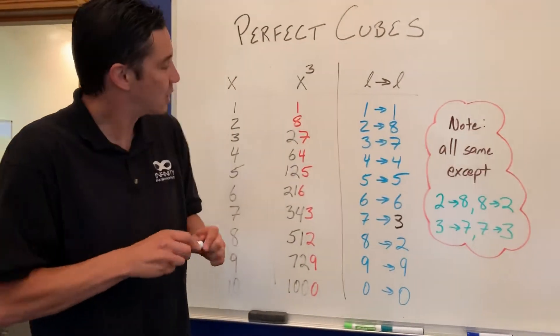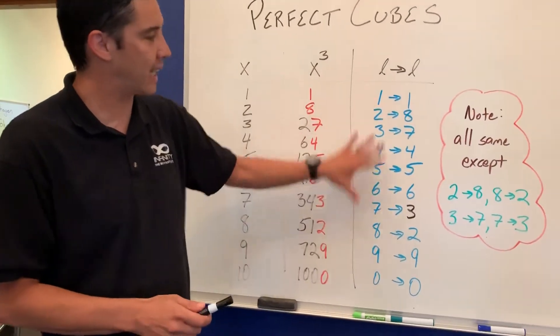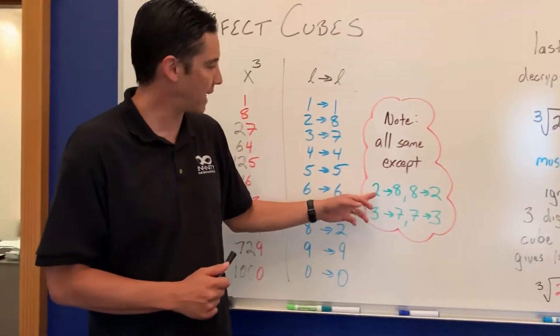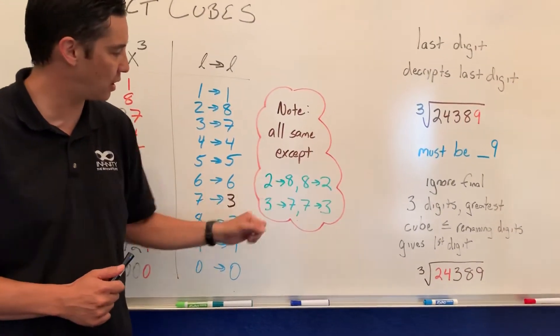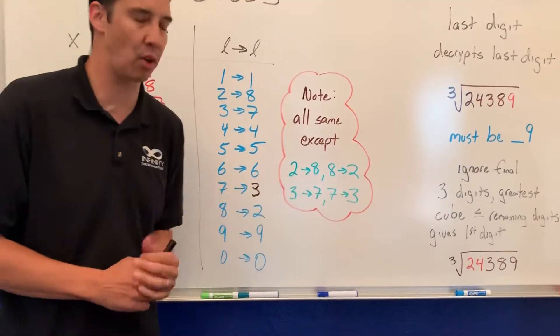Like so. So as long as you have your cubes memorized you can get this done, right? All of them are the same except 2 goes to 8, 8 goes to 2, 3 goes to 7, and 7 goes to 3.